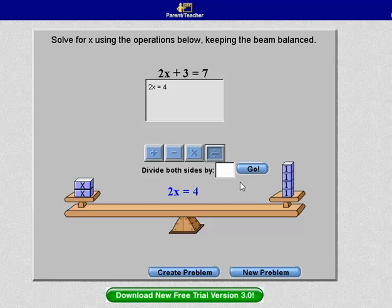Now I'm going to divide both sides by 2. And hit Go. And I get x equals 2. I like they have the algebraic steps here, as well as the physical.